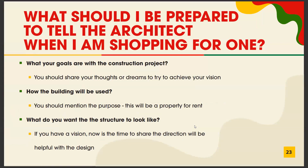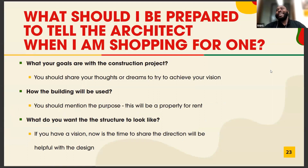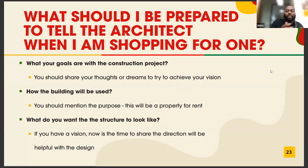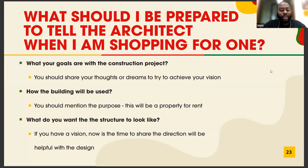A participant asked what a design-build team consists of. It typically includes the general contractor, the architect, and subcontractors like a project engineer — all part of one organization. When all these professionals work under the same company, the individual line item costs tend to be lower than if you hire two separate organizations: one for the general contractor and another separately for the architect.